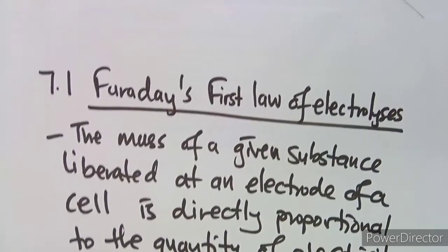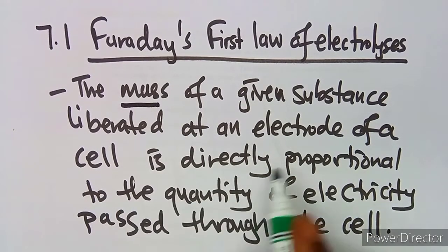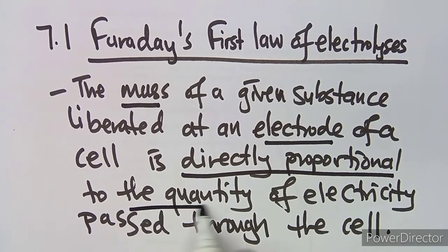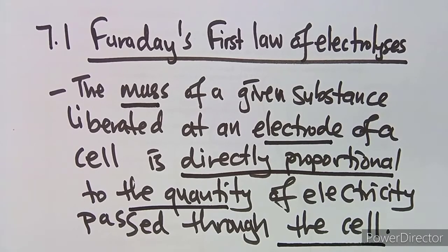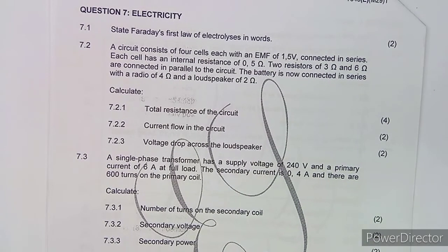We actually talked about this law before. The mass of a given substance liberated at an electrode of a cell is directly proportional to the quantity of electricity passed through the cell. So the mass liberated on the electrode is directly proportional to the quantity of electricity passed through the cell. These are the major important points to indicate when working with Faraday's first law.